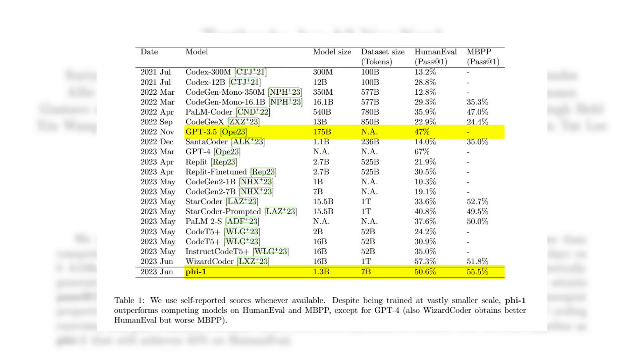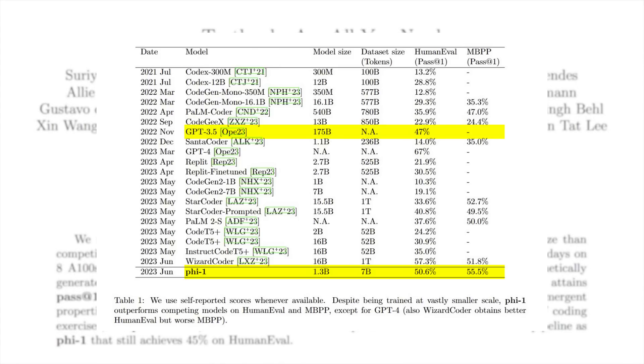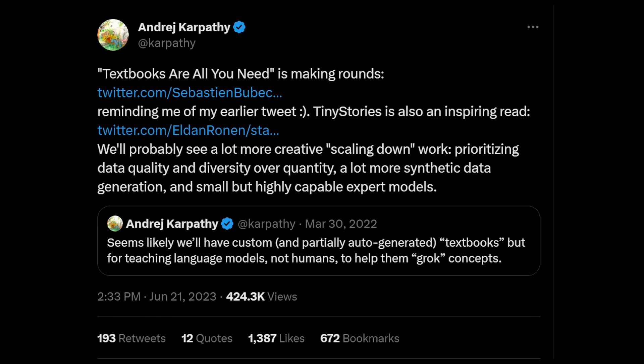For more contrast, GPT-3.5 is 100 times larger than PHY-1, yet performs slightly worse. Not only will we see a lot more creative scaling down of models which prioritize data quality and diversity over quantity, but also small but highly capable expert models. This is a good sign of progress, as large corporations would no longer hold an exclusive or strong leverage against others by just throwing an absurd amount of money at creating super large language models.